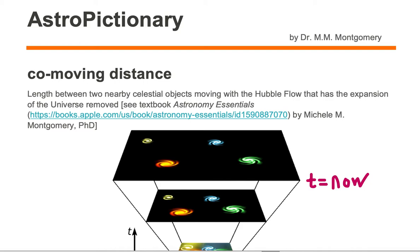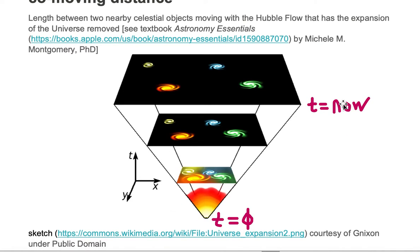Co-moving distance is the length between two nearby celestial objects moving with the Hubble flow that has the expansion of the universe removed. Let's take a look at this co-moving distance in this sketch of the expansion of the universe.